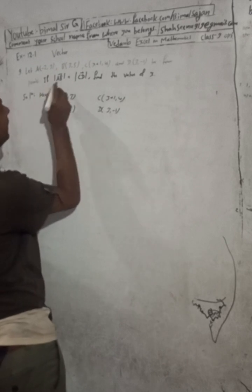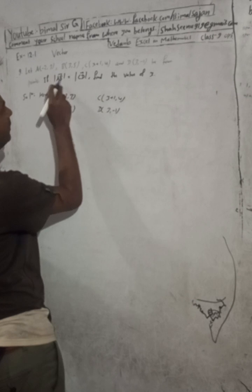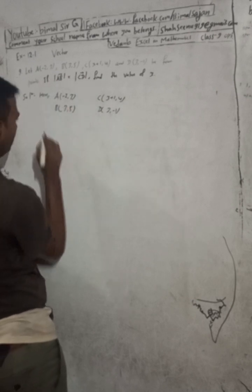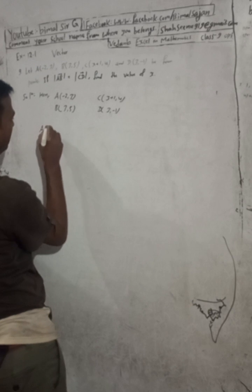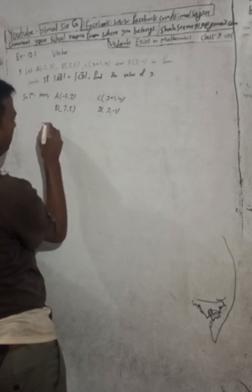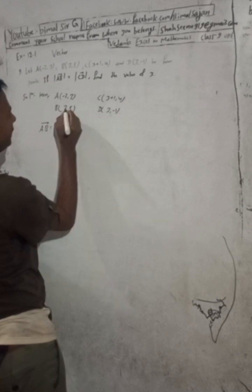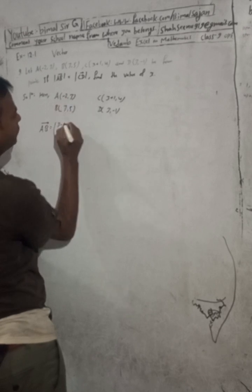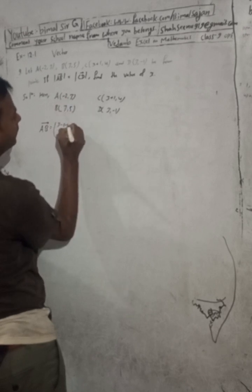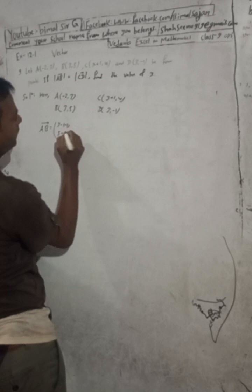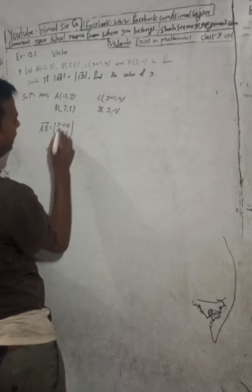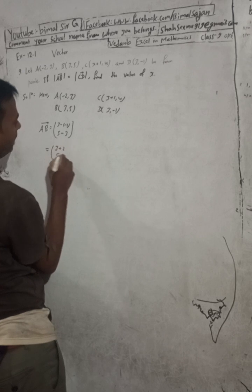We have |AB| = |CD|. So first of all, find vector AB. The AB vector formula gives us: (3 - (-2), 5 - 3) = (3 + 2, 5 - 3) = (5, 2). So vector AB = (5, 2).